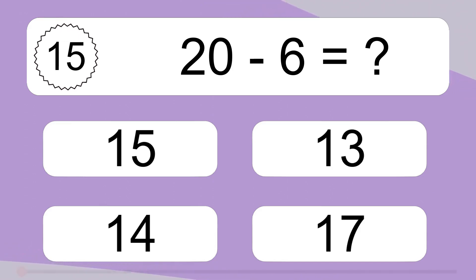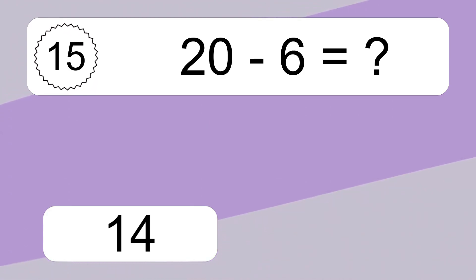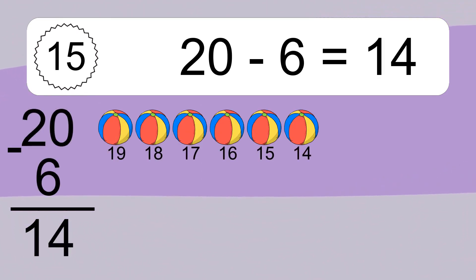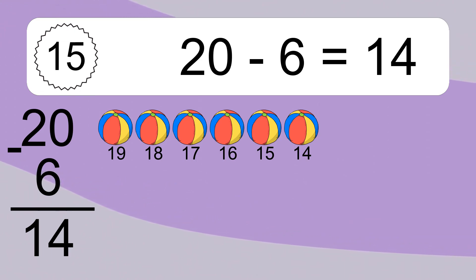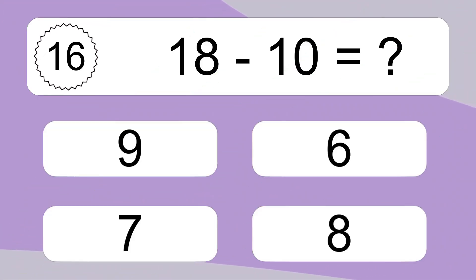20 minus 6 equals what? 20 minus 6 equals 14. Let's count it! 19, 18, 17, 16, 15, 14.